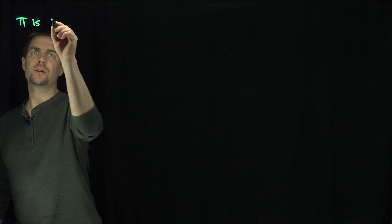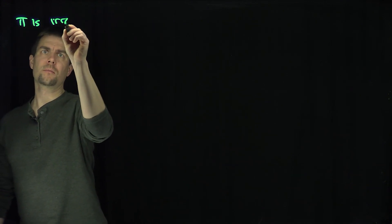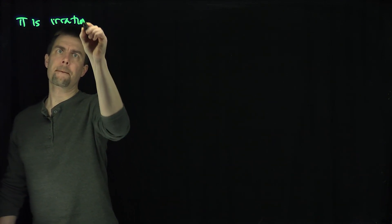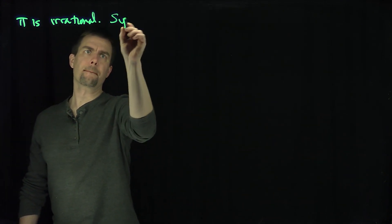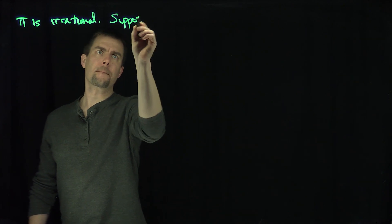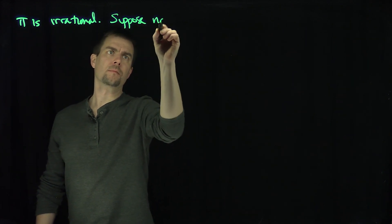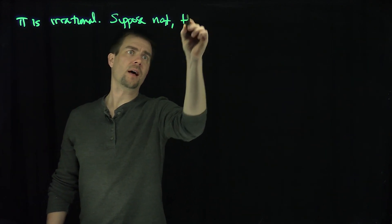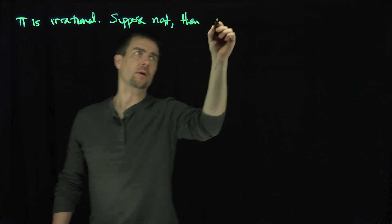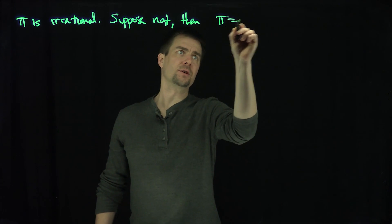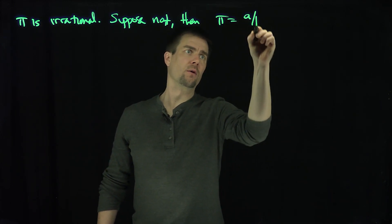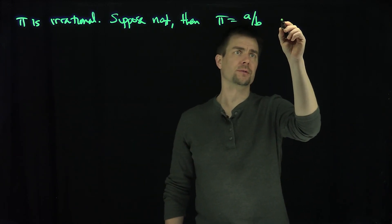Hello, students. In this video, we'll give Niven's proof that pi is irrational. So we claim that pi is irrational. Suppose not. Then pi is equal to a over b, where a and b are integers.